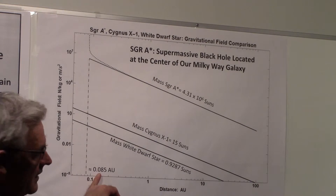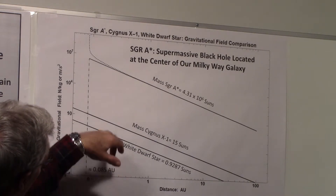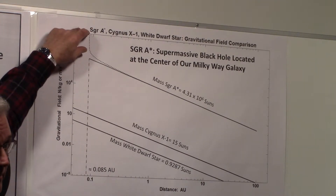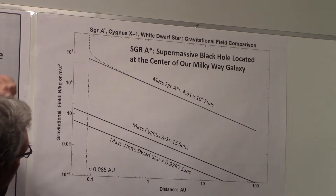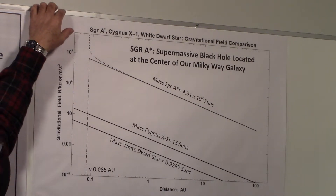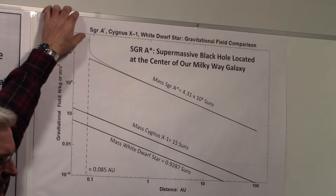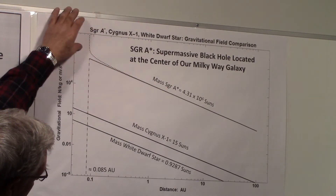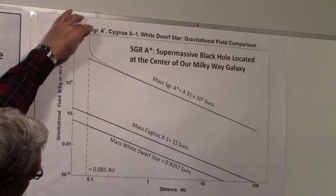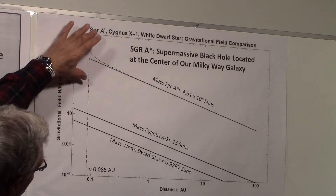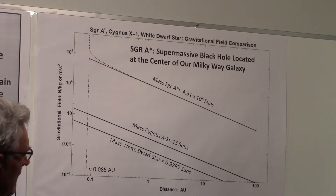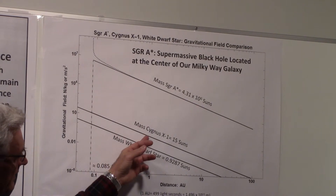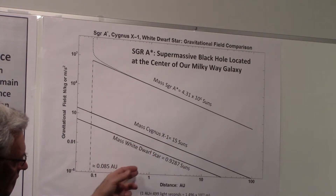That curve is plotted and you can see how it deviates from Newton's law and begins going up. This marks the diameter of the supermassive black hole — it shoots up to a very large value, basically going to infinity. That would be the actual gravitational field strength if you could imagine standing on the event horizon. We're not at a short enough distance to show the same type of effects for both Cygnus X-1 or the white dwarf.